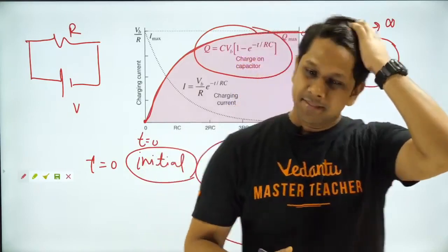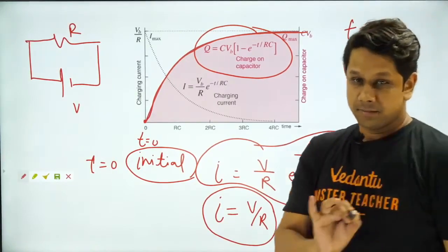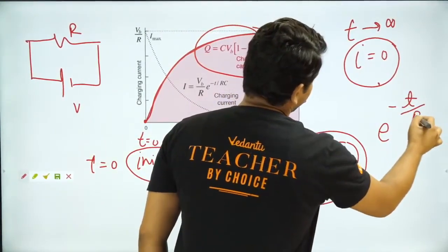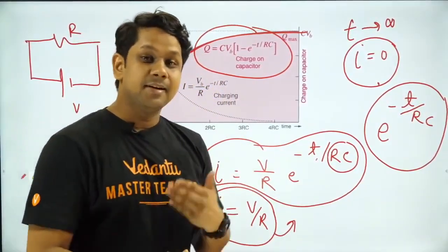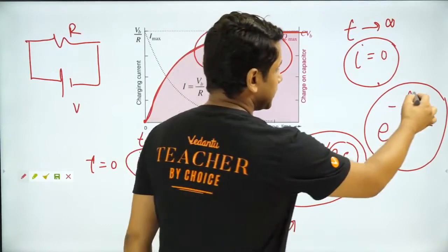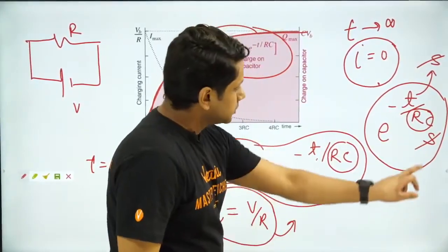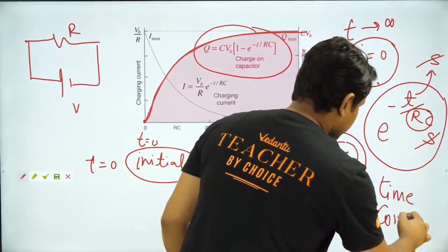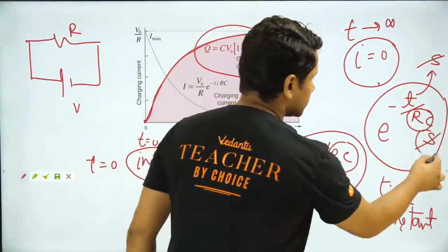इसके अलावा एक और चीज है — t/RC में RC को time constant कहते हैं। Exponential term dimensionless होता है, इसलिए t/RC भी dimensionless होना चाहिए। चूँकि t का dimension second है, RC का भी unit second होगा — so that second और second cancel हो जाएं। R × C is known as the time constant, and its unit is second।